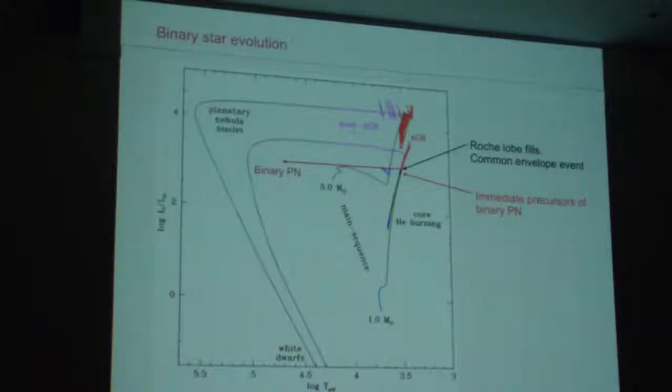Now, in the binary evolution scenario, you have a close wide binary, and at some stage on the AGB the star fills its Roche lobe. You have a common envelope event, and that produces a tight binary, or perhaps a merged star as a result of that.